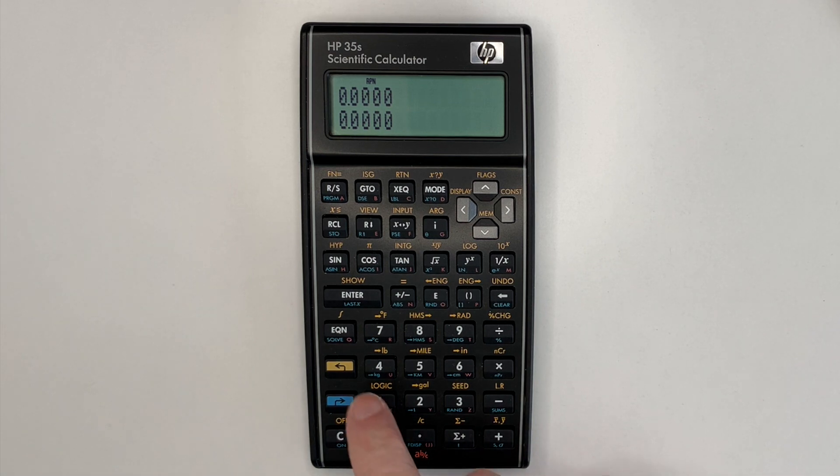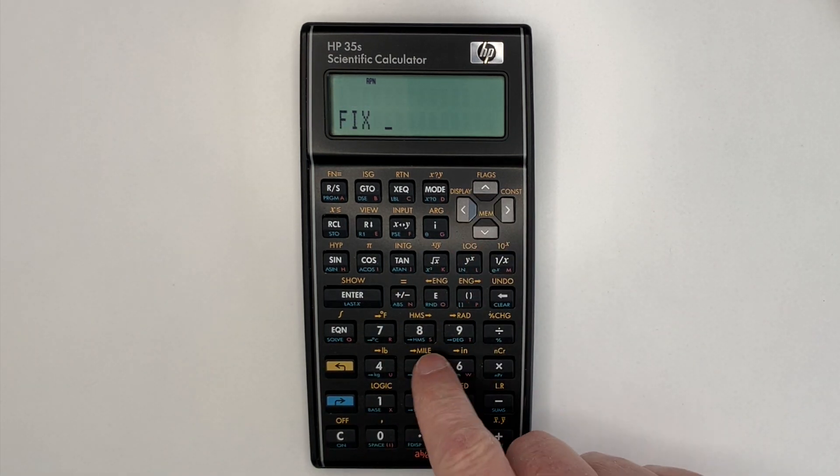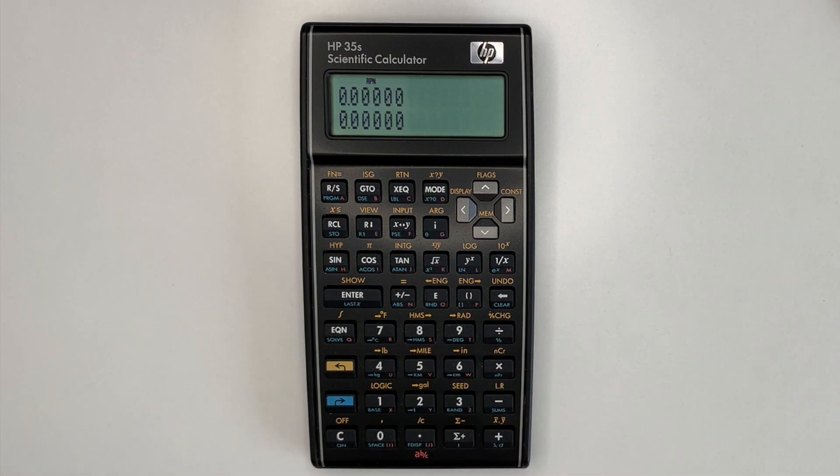So first we'll choose the fixed size, and I'll use 5 for all the examples.